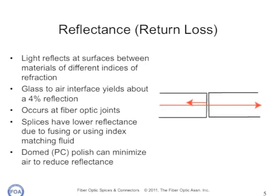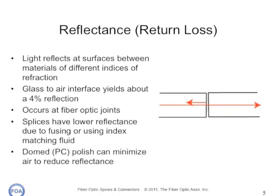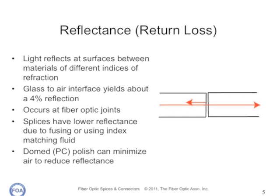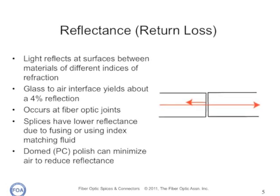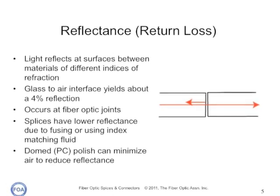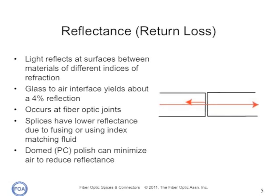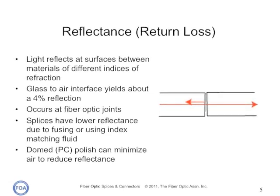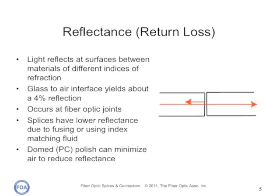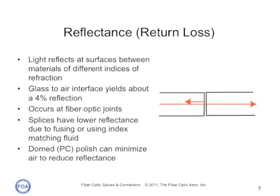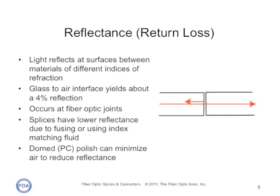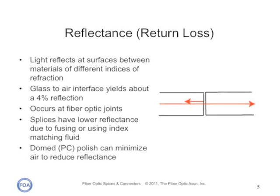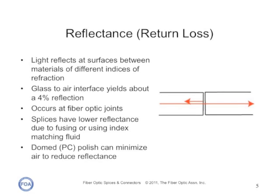Reflectance is caused by an imperfect joint between two fibers. If there is any air in the interface between the two fibers, it will cause a reflection. That reflection can cause problems with lasers or with noise in high-bit-rate, high-powered systems. Splices have low reflectance due to their fusing in a fusion splicer or using index matching fluid in mechanical splices.